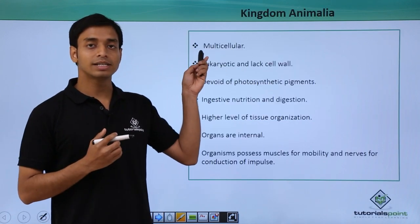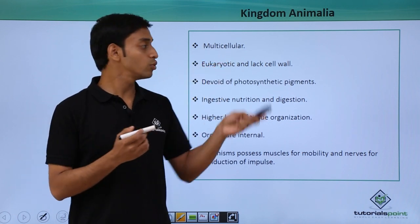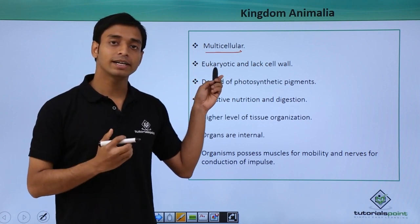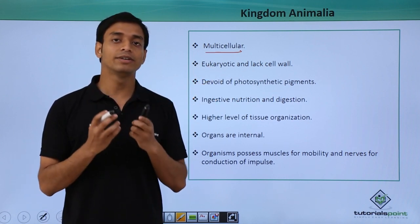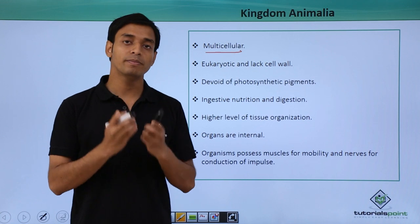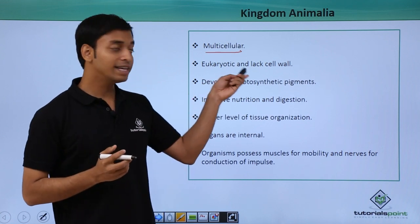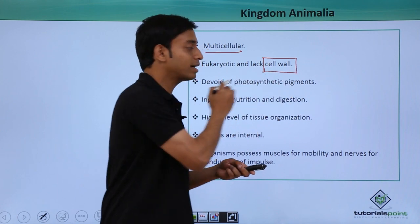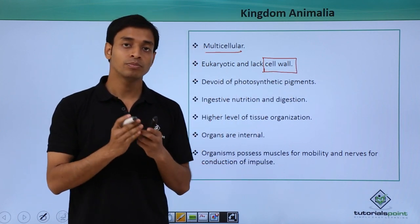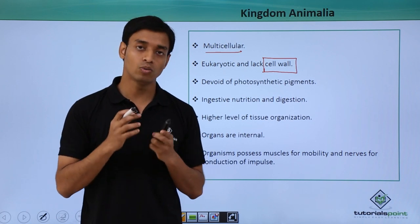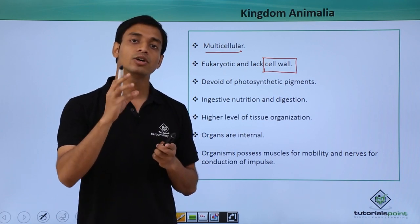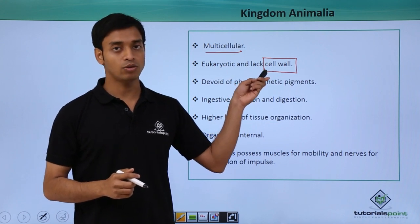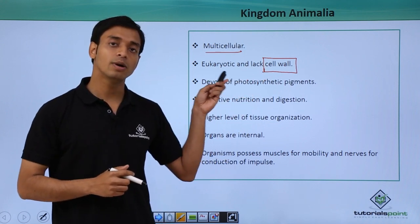These animals, or Kingdom Animalia, include organisms which are mostly multicellular. They are eukaryotic, meaning they have a proper well-defined nucleus and also membrane-bound organelles, and they lack a cell wall. This is a specific difference from the plant kingdom, because plant cells have a cell wall as a protective covering layer, whereas in animals they do not have a cell wall, but they are eukaryotic like plants.